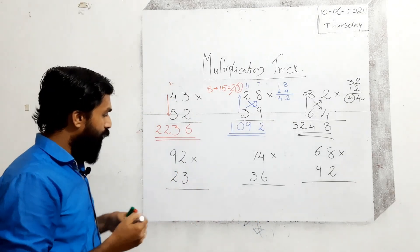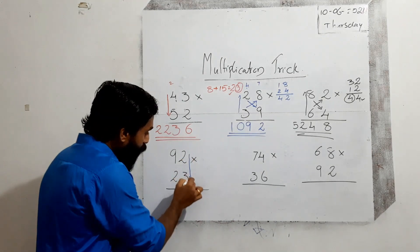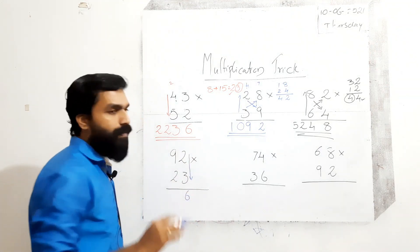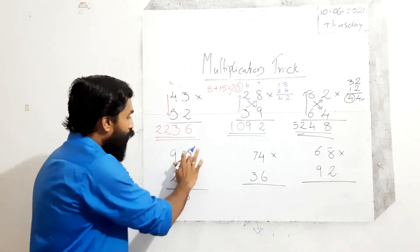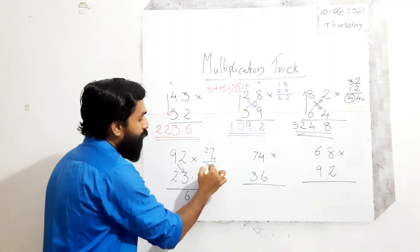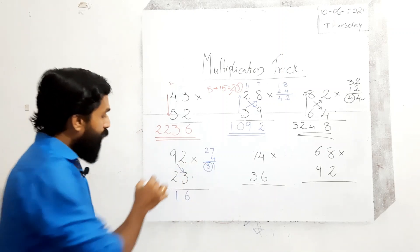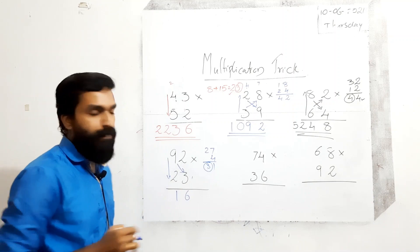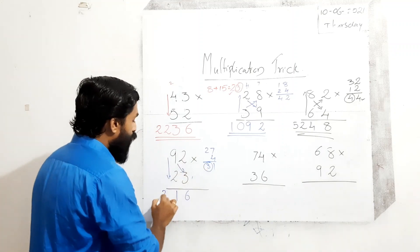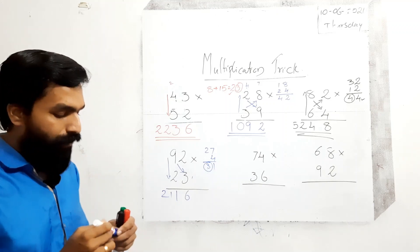Next: 92 into 23. Unit places: 2 into 3 is equal to 6 — write it down, nothing remaining. Cross multiplication: 9 into 3 is 27, and 2 into 2 is 4. Add: 27 plus 4 is 31. Write 1 here, carry 3. Tens place: 9 into 2 is equal to 18. 18 plus 3 is equal to 21. Write 21 here. Answer: 2116.